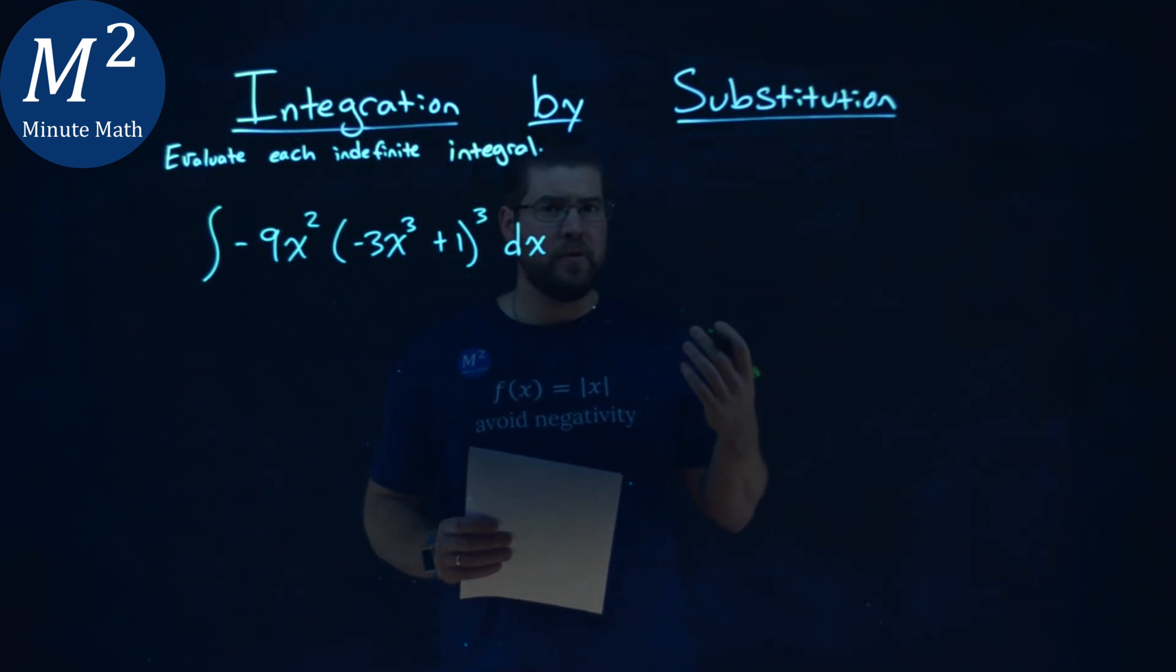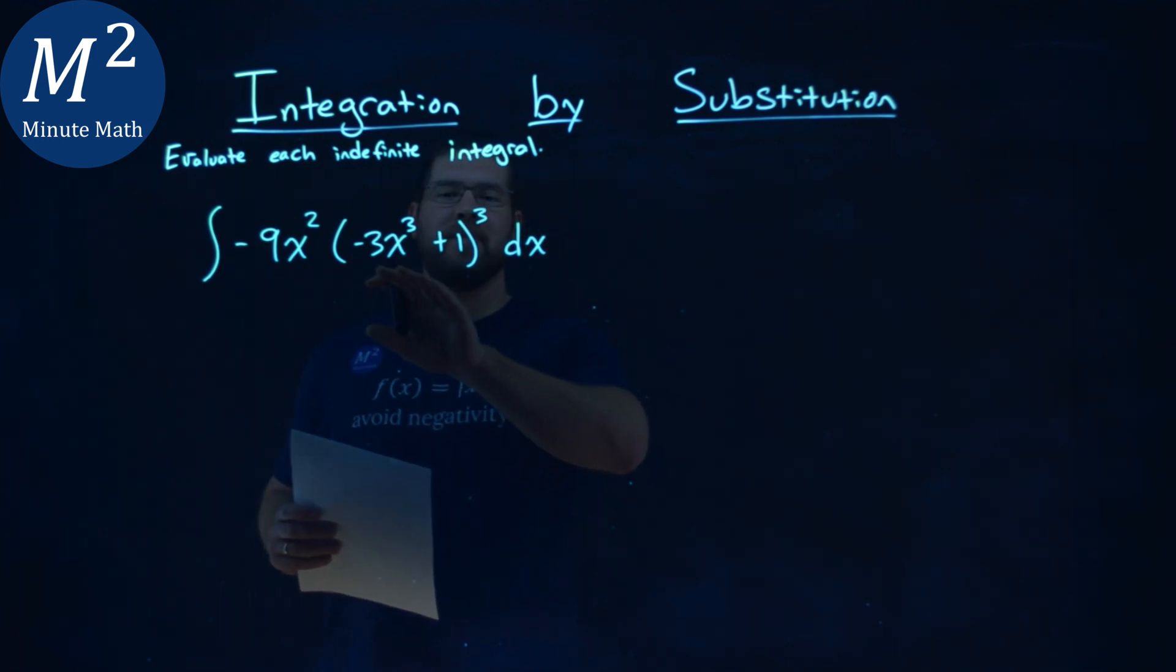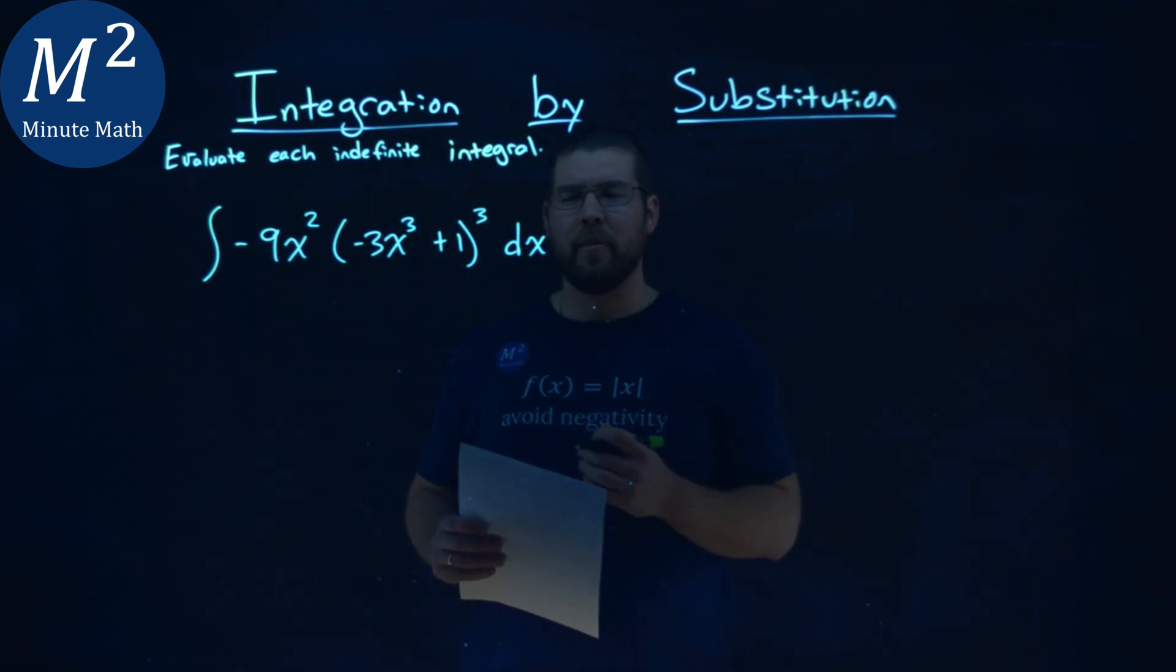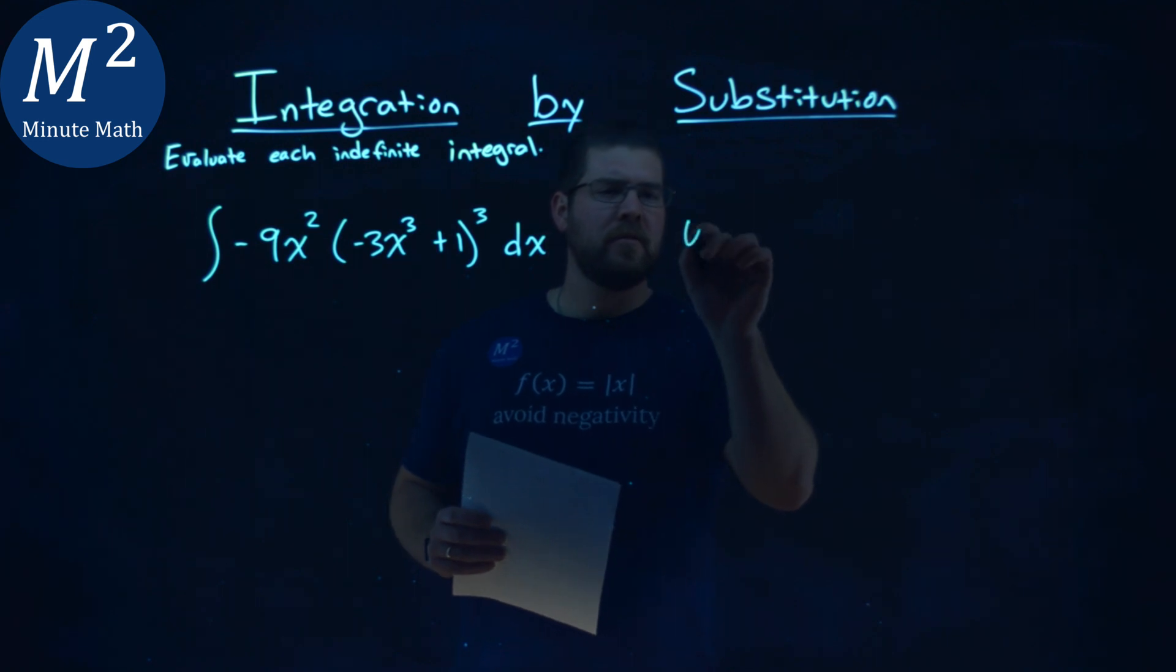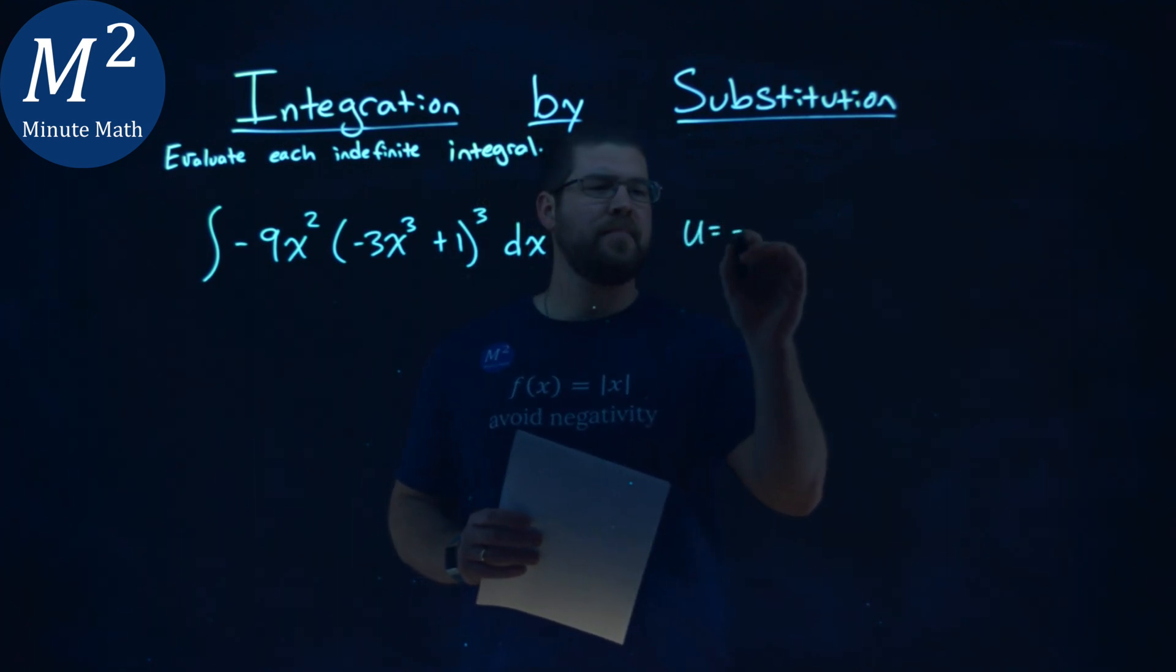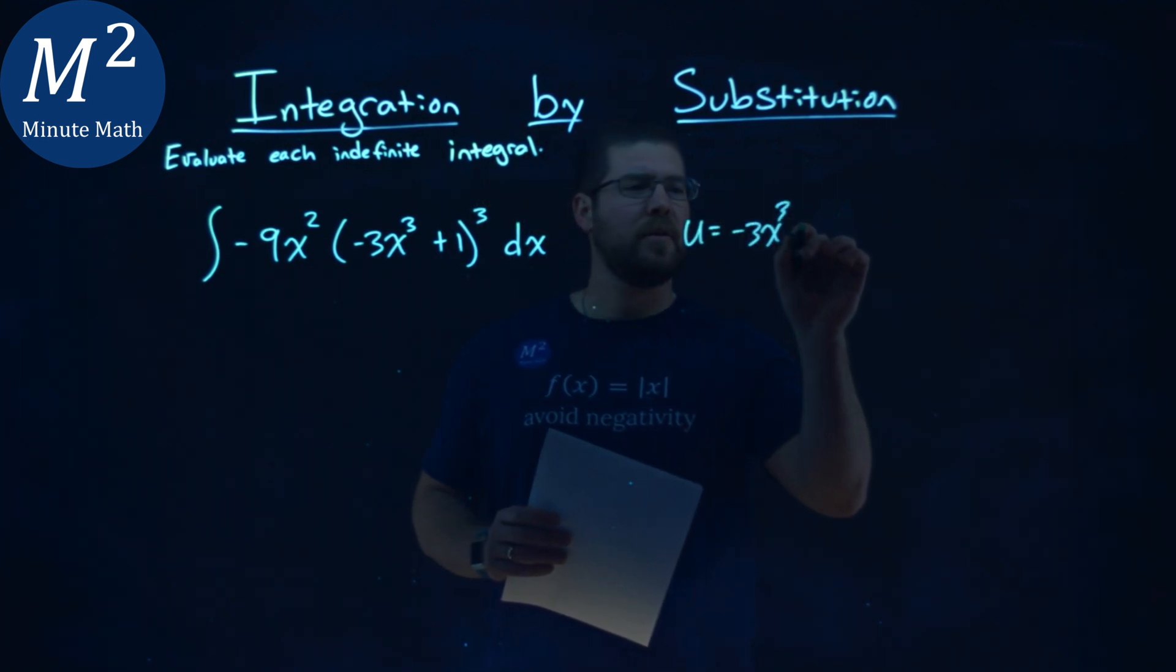Now we're doing this by substitution, and my gut tells me that inside this parenthesis is most likely the u value that will be beneficial to us. So I set my u value to be what's on the inside, negative 3x to the third plus 1.